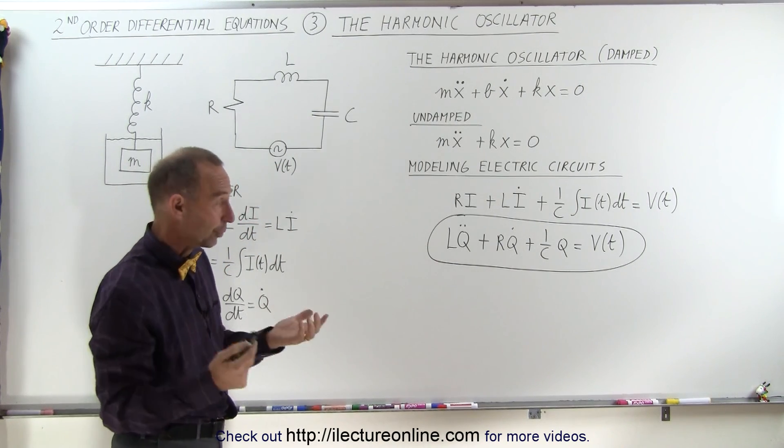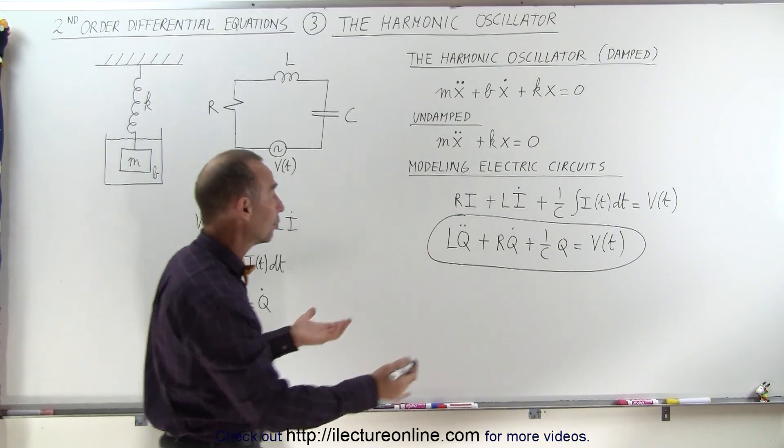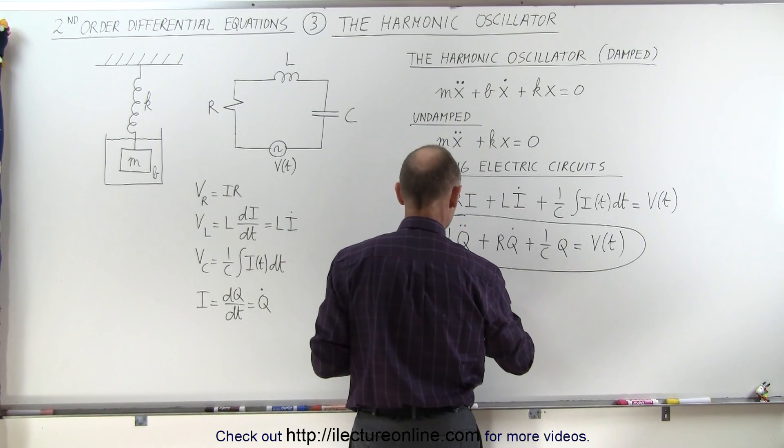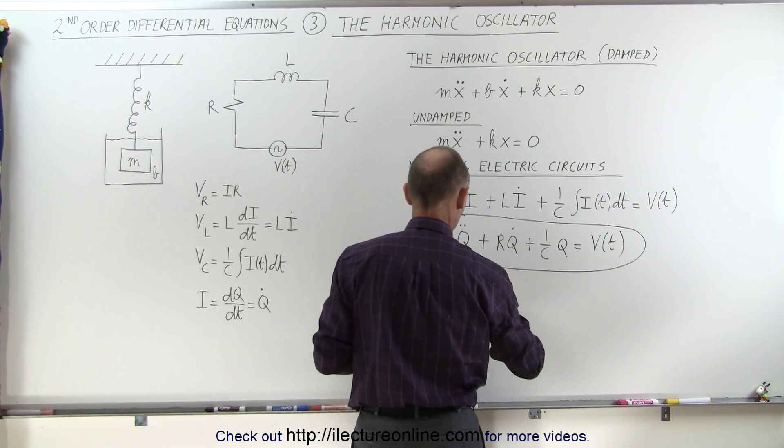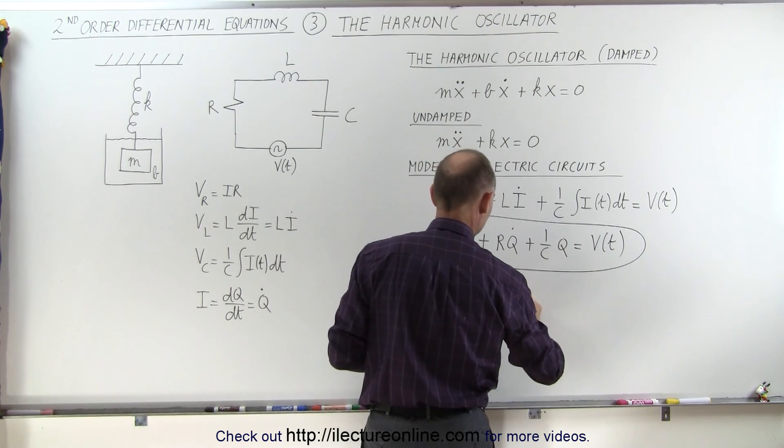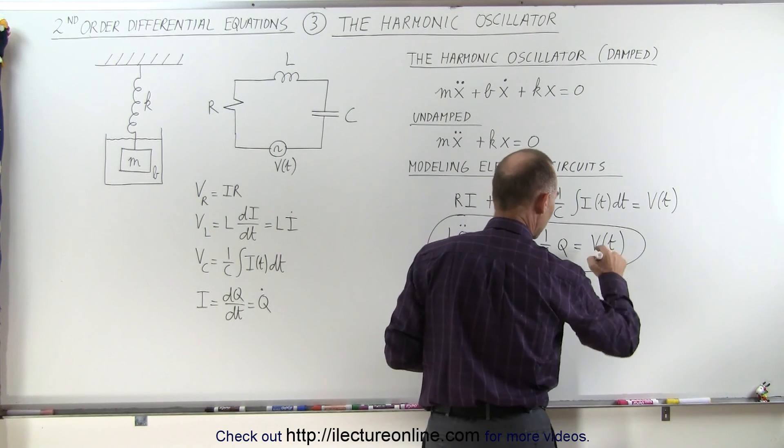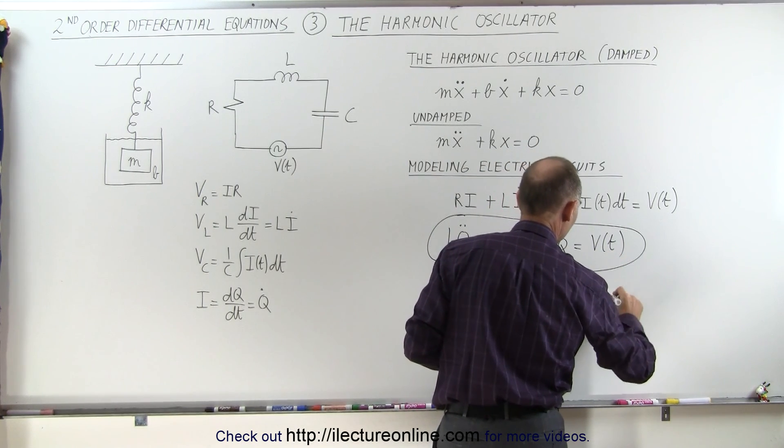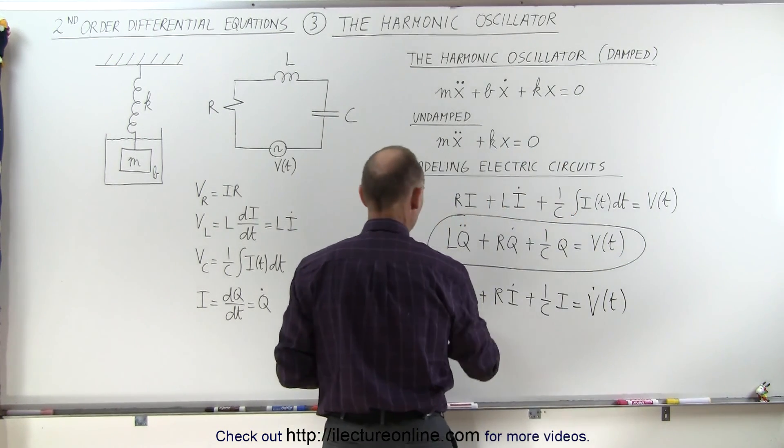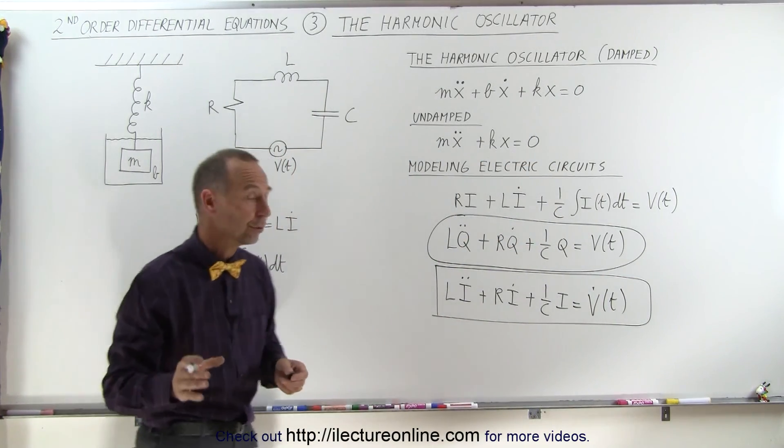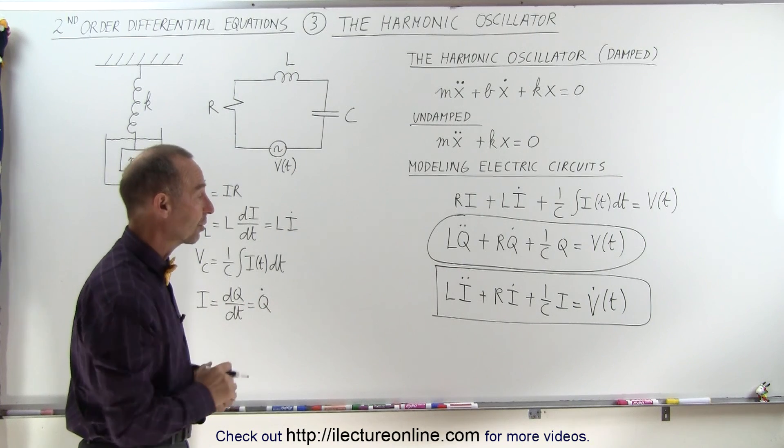If we want to write in terms of current, what we can do is we can take the derivative of everything, and now we can write this as L i double dot, plus R i dot, plus 1 over c i, is equal to the derivative of that, which would be v dot of t. And so this would be the way in which we could write that very same equation as a function of current, instead of a function of charge across the capacitor.